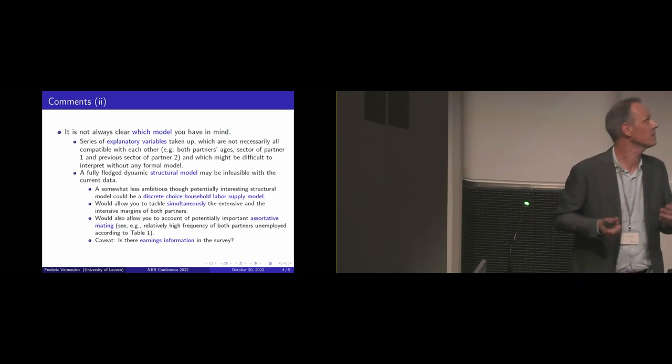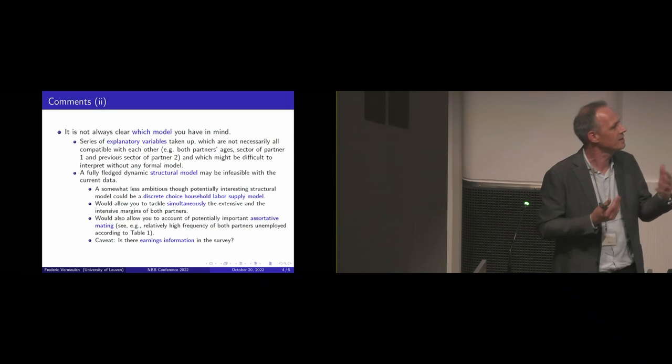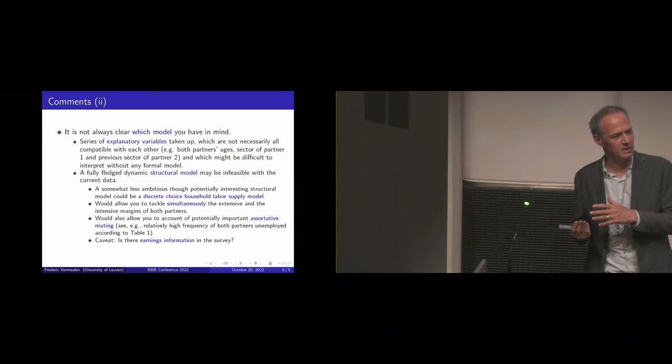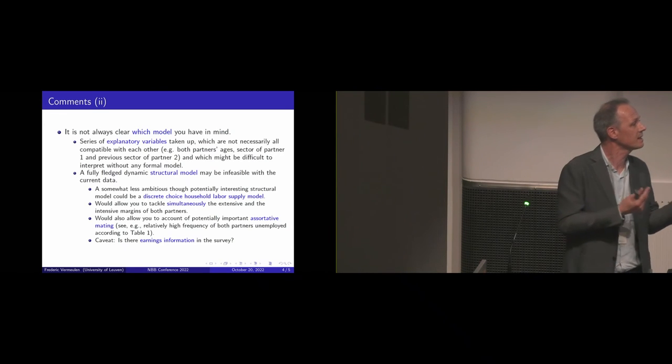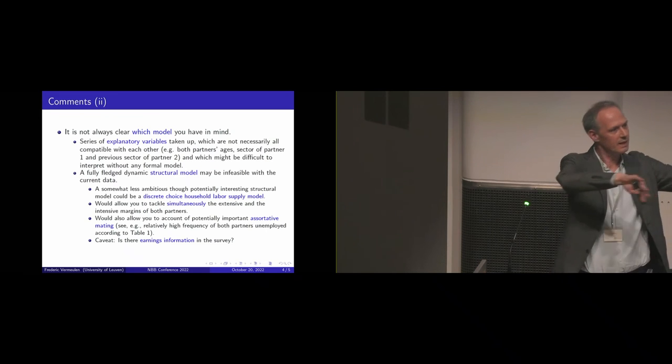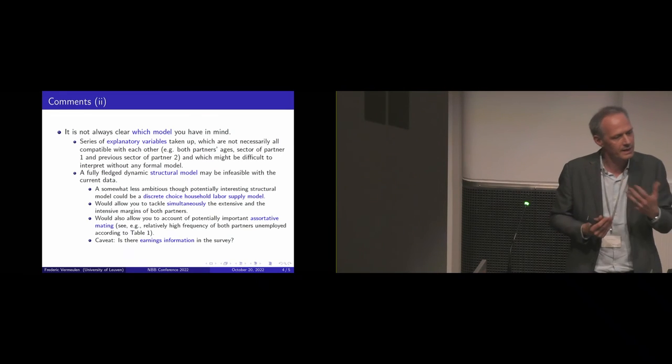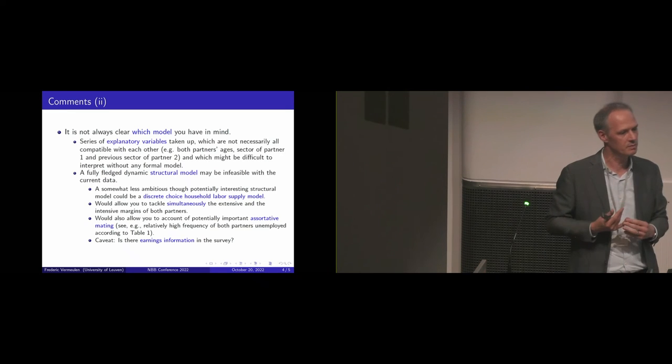But still maybe a first step can already be done by for example trying to estimate a relatively standard discrete choice labour supply model. Because at the same time this would allow you to also model at the same time simultaneously the extensive and the intensive margin. So now you split your data in several parts and look at these margins independently of each other. But of course they are also related to each other. In that sense I think the paper might benefit by trying to exploit it simultaneously.